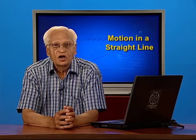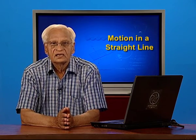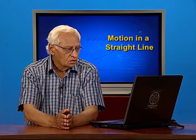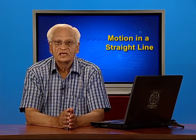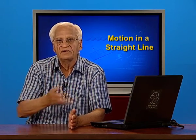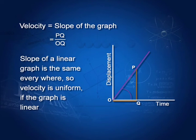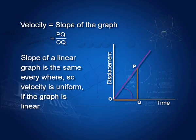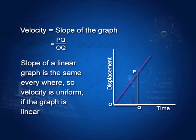Velocity is equal to the slope of the displacement time graph, which we did in the last lecture. The slope of a linear graph is constant — it is the same everywhere. So if the graph between displacement and time is linear, then the velocity is uniform, meaning the slope is the same everywhere. We measure the slope by taking at a certain time the displacement and dividing by the time taken. If the graph is linear, the slope is constant and therefore the velocity is uniform.